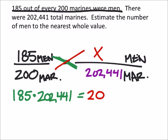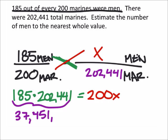So I have 185 times 202,441 and this should equal the other cross where I have 200 times x. Now when I multiply these, 185 and 202,441, this is what I got: 37,451,585, and this should equal 200x.